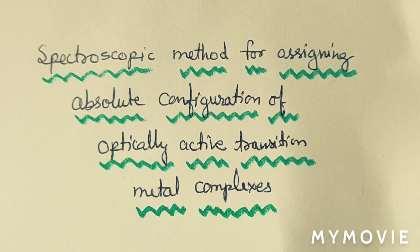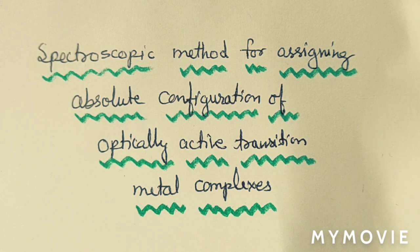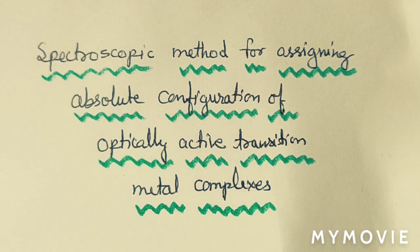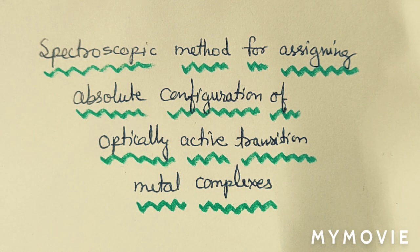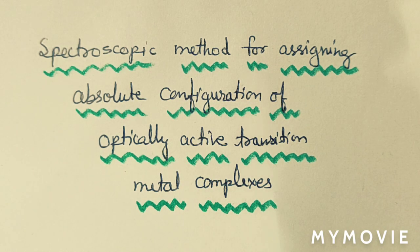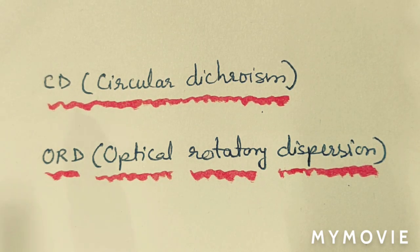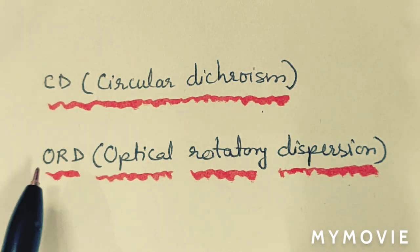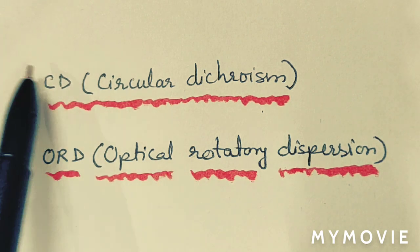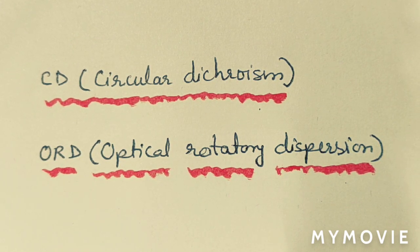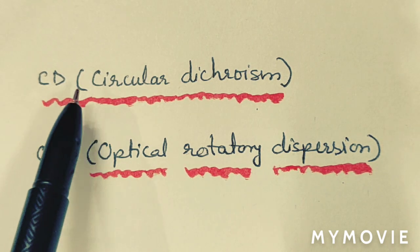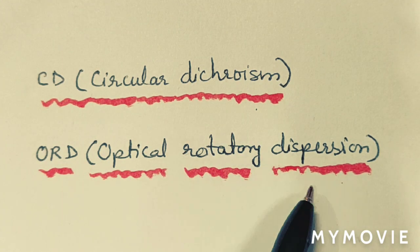The methods helpful in determining the absolute configuration of transition metal complexes are correlated with optical activity. The two main spectroscopic methods we will study are CD (circular dichroism) and ORD (optical rotatory dispersion). These two spectroscopic techniques are useful in assigning the absolute configuration of transition metal complexes.